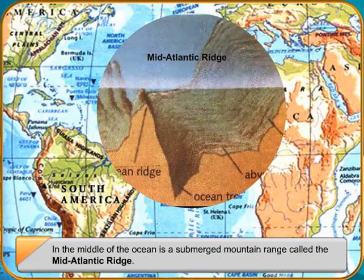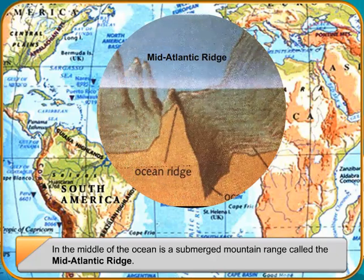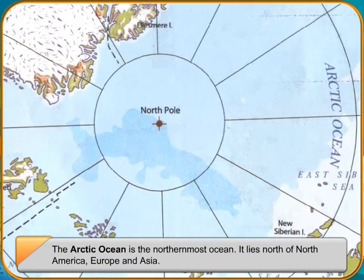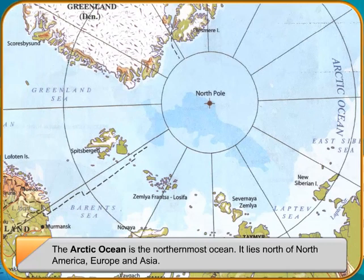Arctic Ocean. The Arctic Ocean is the northernmost ocean. It lies north of North America, Europe, and Asia. Located inside the Arctic Circle, it remains frozen for most part of the year.